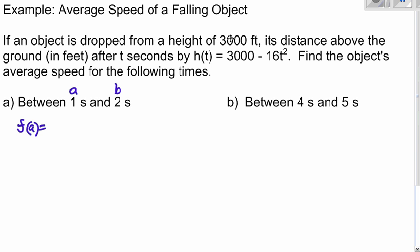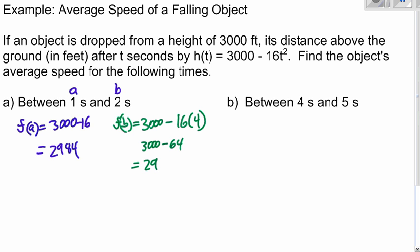f of a then would equal 3,000 minus 16 times 1 squared. So 3,000 minus 16, which is 2,984. Now plug in 2 seconds. That's 3,000 minus 16 times 4. That's 3,000 minus 64, which is 2,936.